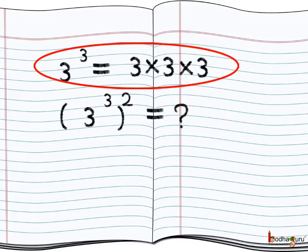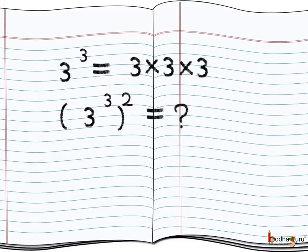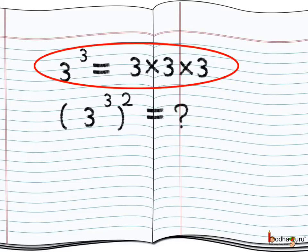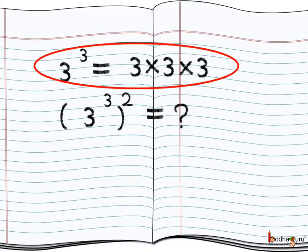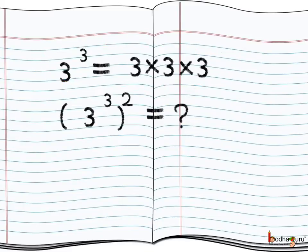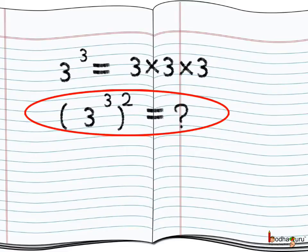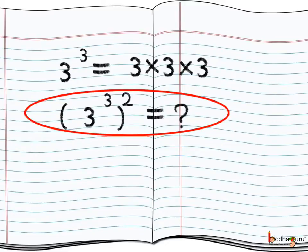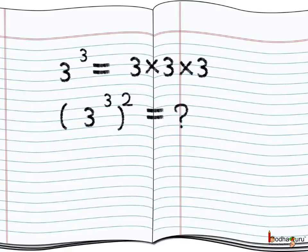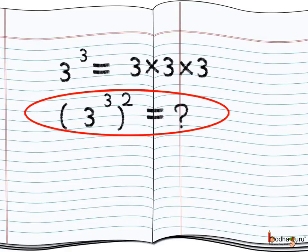We know 3 to the power 3 means 3 multiplied by 3 multiplied by 3. But what does this mean? Look, 3 to the power 3 and then it is raised to power 2. What is it exactly?